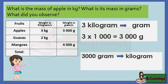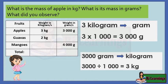3,000 grams to kilograms — we know that 1,000 grams is equal to 1 kilogram, so we divide 3,000 grams by 1,000. 3,000 divided by 1,000 equals 3 kilograms. We observe that 3 kilograms is equal to 3,000 grams.